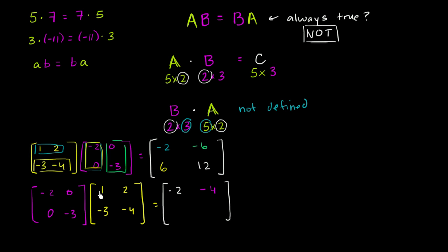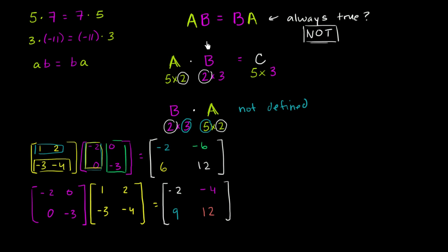Let's finish it for completeness. The third entry — second row, first column — is 0 times 1 plus negative 3 times negative 3, which is positive 9. It doesn't match up. And finally, 0 times 2 plus negative 3 times negative 4 is positive 12 — that one did match, but clearly these two products are not the same thing. Even though both products are defined, the yellow matrix times the purple is not the same as the purple times the yellow. Matrix multiplication is not commutative.